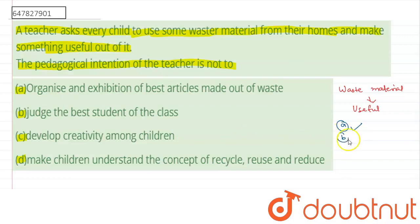Option B says: judge the best student of the class. This is not the intention of the teacher, because the teacher doesn't want to judge students and declare some as better than others. So option B is not the intention of the teacher.